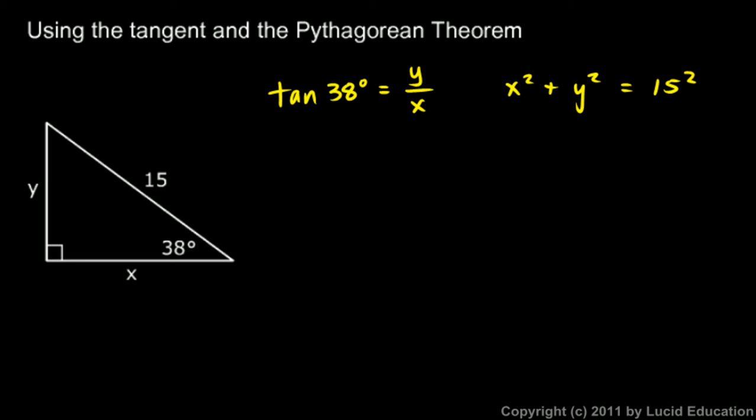Now how do I solve this? Well, there's a few ways we could approach it. I'll do this with a substitution. I'm going to take this first equation and solve it for y. I get y is going to be x times the tangent of 38 degrees.